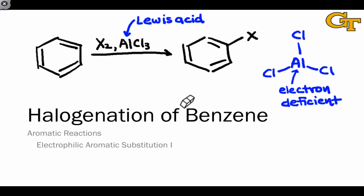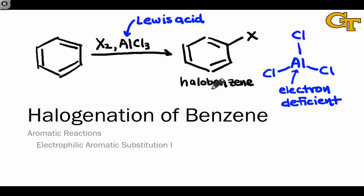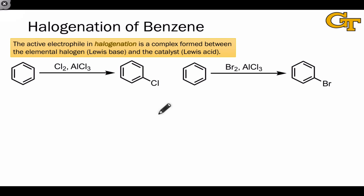This leads ultimately, through the classical EAS mechanism, to a halobenzene — a halogen-substituted benzene. At this point, we really want to focus our attention on how the active electrophile is generated and the nature of the active electrophile. That comes down to a reaction between these two reagents before the aromatic ever actually gets involved.